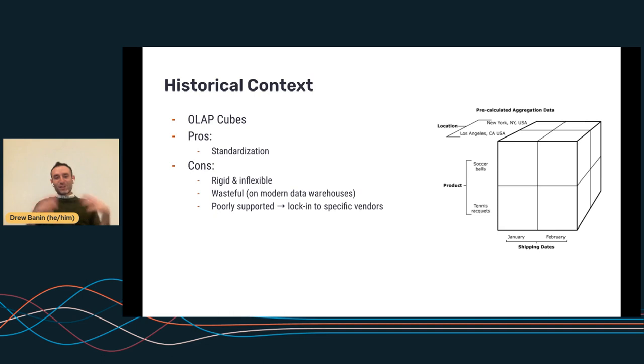Cubes though. If you're not familiar, there's this concept, it's called an OLAP cube. And the idea is you can pre-aggregate data in a database, in a data warehouse, along a series of well-defined dimensions. So in this example that we're looking at here, it's location, it's product, it's shipping dates, and you can define these as dimensions and you can pre-calculate in tables in the database some number like total sales or revenue, whatever it is, you can pre-calculate. That will get you standardization.